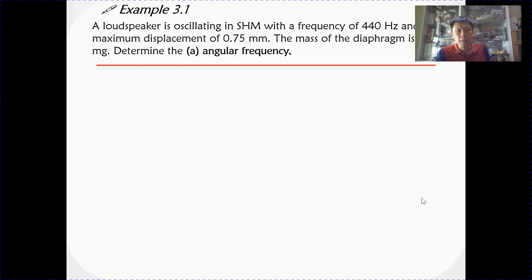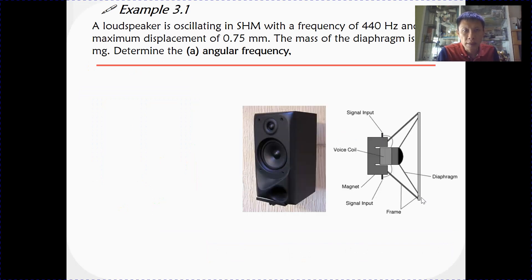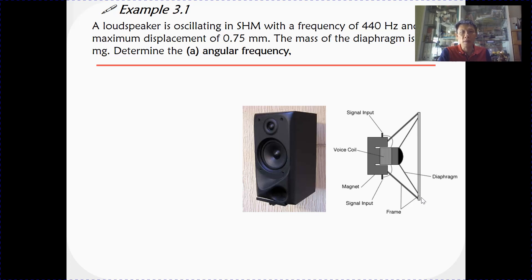Let's look at example 3.1 for illustration. We are told that the diaphragm of a loudspeaker is undergoing simple harmonic motion. The frequency is 440 Hz and the maximum amplitude is 0.75 mm. The mass of the diaphragm is 28 mg. Determine the angular frequency.